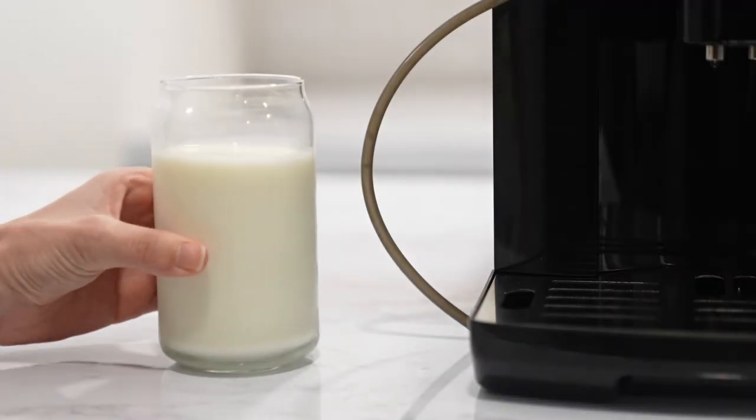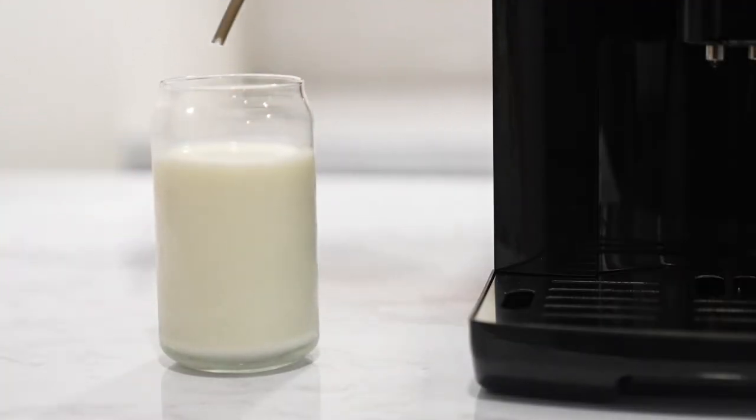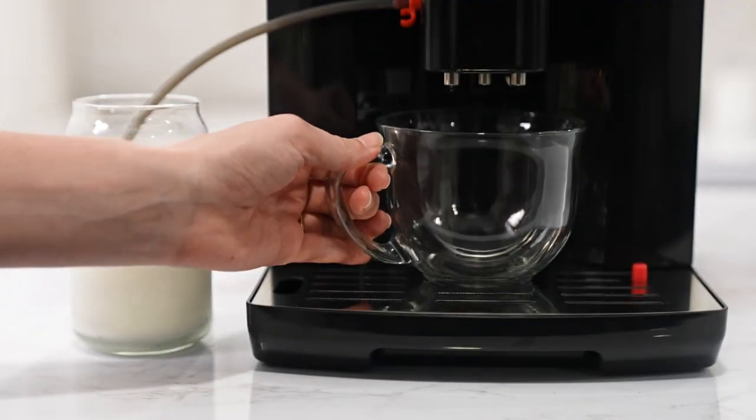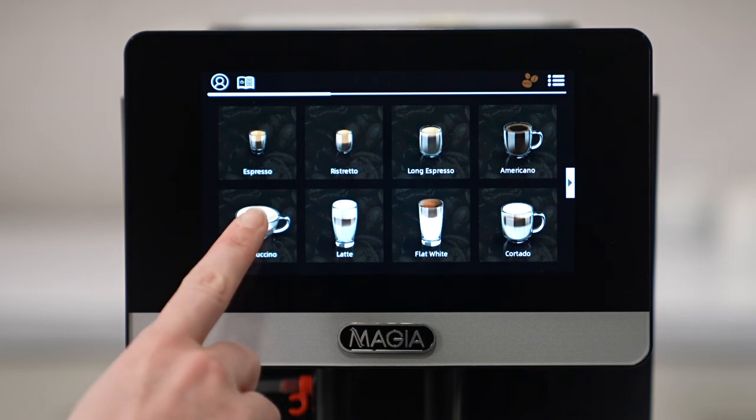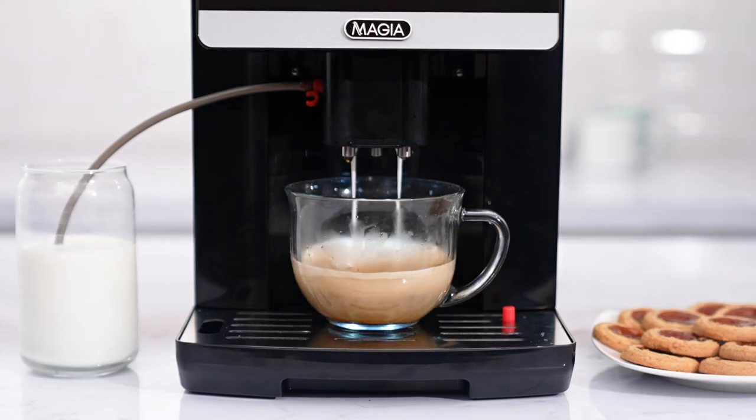If the drink you want to make contains milk, pour milk into a cup and place the milk system tube into the milk. Now, simply place your coffee cup under the dispenser and press the icon for the drink you would like to make.